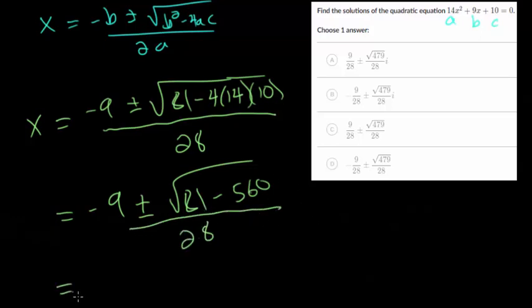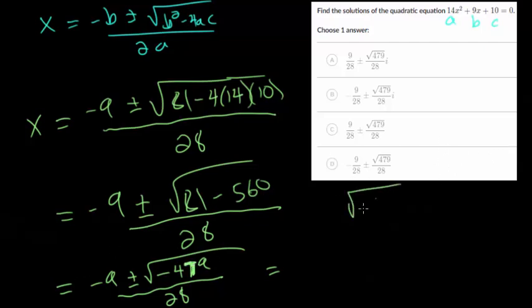And simplifying further we'll actually do the subtraction under the square root. That becomes minus 479 all divided by 28. And lastly we have to simplify this square root. So it's a little bit sloppy but the square root of minus 479.